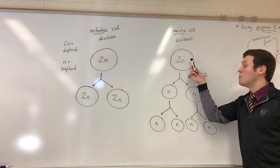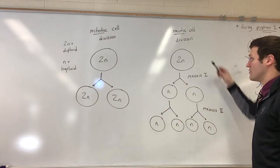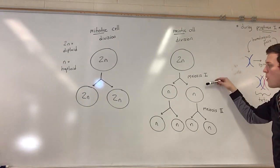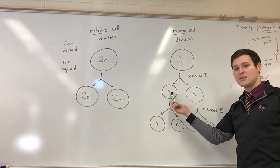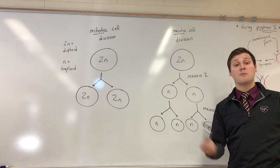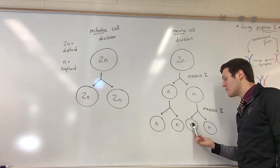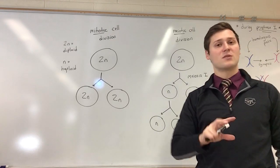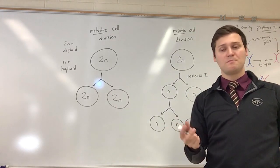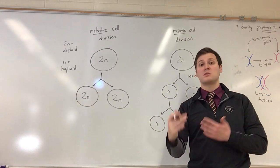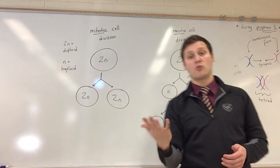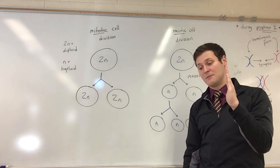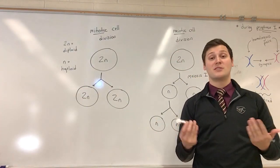Now if we compare that to meiosis, we start off the same way with a diploid cell, but after meiosis 1 we now have haploid cells, and after a second round of division in meiosis 2 we have four haploid cells. You might be confused because the numbers don't seem to add up, but it makes sense once we consider that replicated chromosomes have two chromatids while unreplicated chromosomes have one chromatid — both are still considered chromosomes.